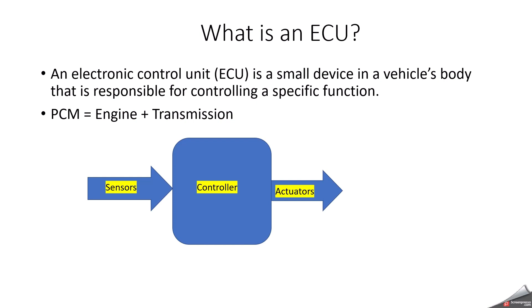For example, an airbag ECU receives information from crash sensors and seat sensors. When there is a crash, the ECU decides which airbags to deploy depending on where passengers are sitting, then it tells the actuators to deploy them. The actuators convert the electrical signal into a physical action using valves, injectors or relays. A vehicle may contain over 100 ECUs that, in addition to essential functions like engine performance and power steering, control comfort and security features such as parking assistance, memory seats and airbag deployment.